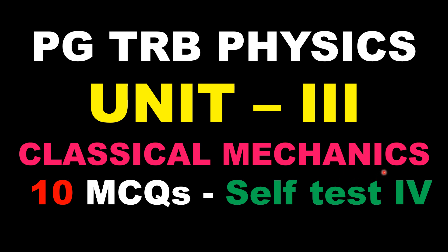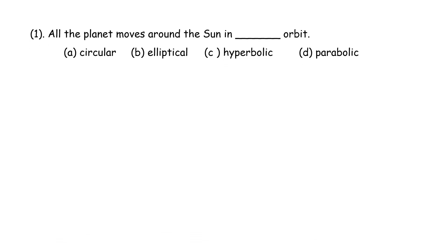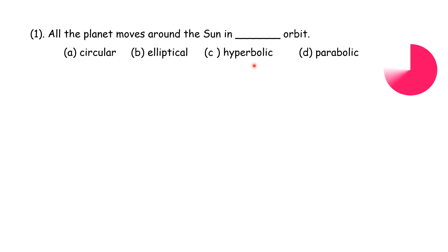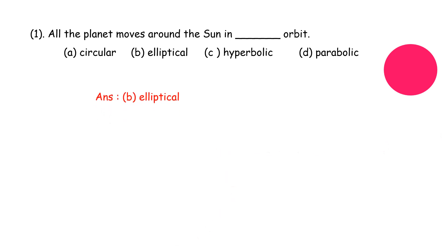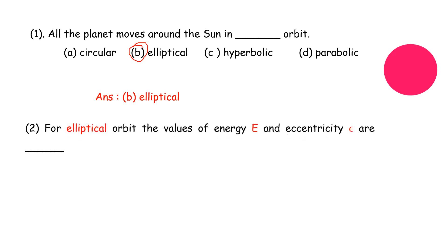The first question: all the planets move around the sun in — what? The four options are circular, elliptical, hyperbolic, and parabolic. The correct answer is that all the planets move around the sun in an elliptical orbit, so option B is the correct answer.